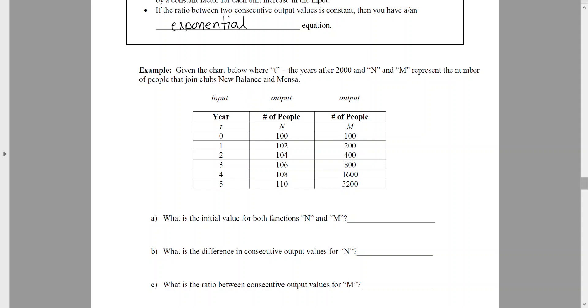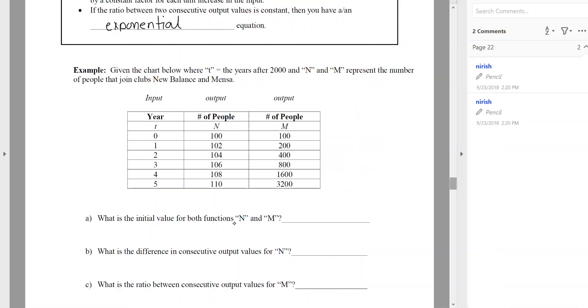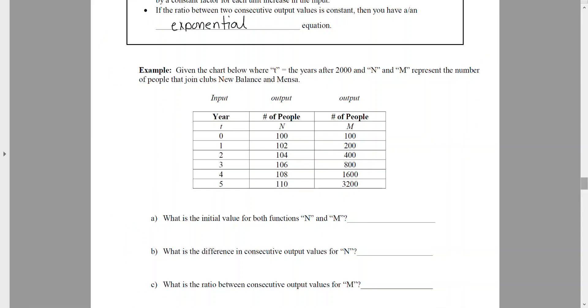What is the initial value for both functions N and M? So for this one, when you talk about an initial value, you're looking at the y-intercept. So the y-intercept occurs right here when x equals zero, our y value then is our y-intercept, and that's our initial amount. So our initial value for both N and M are 100 people.